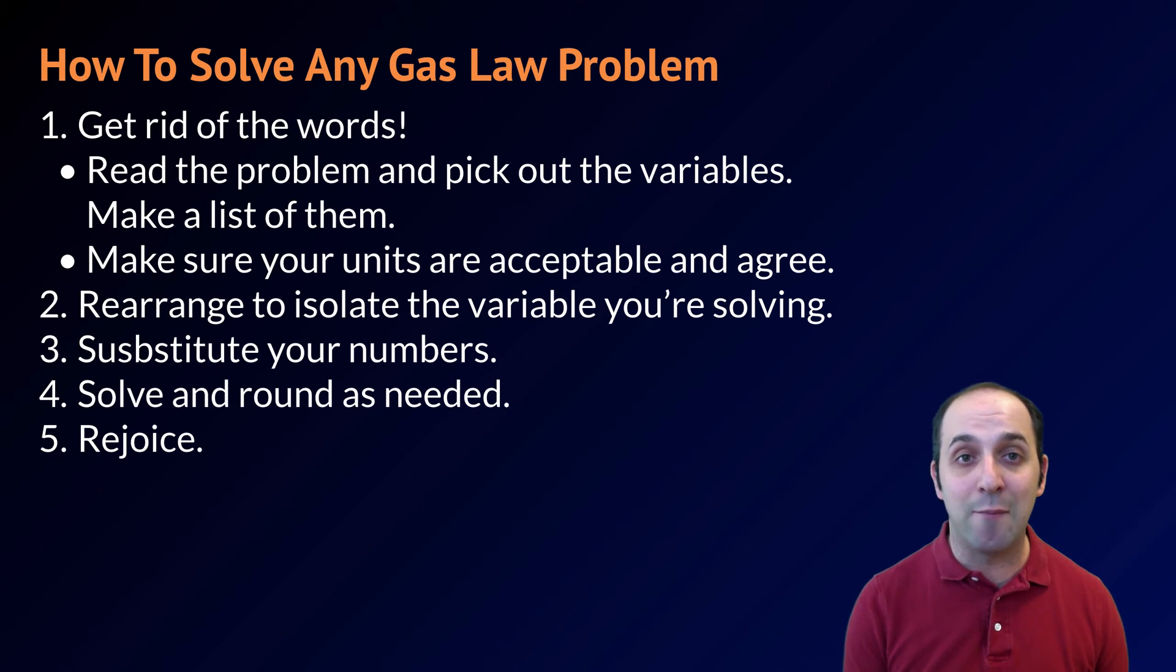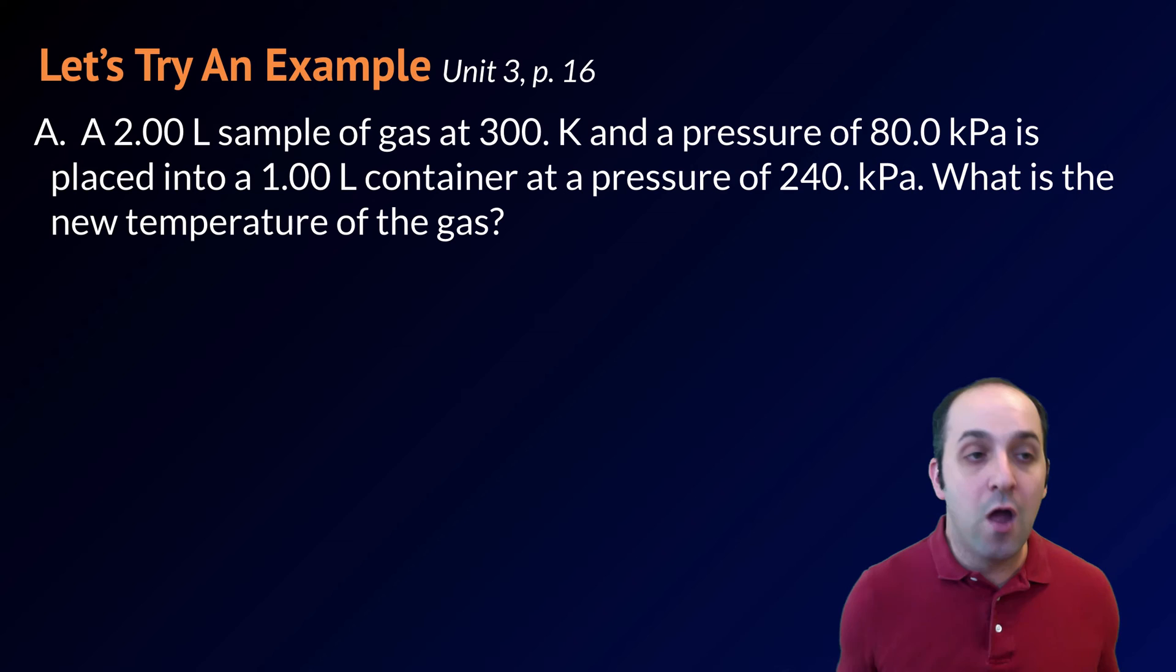Let's take a look at an example. This is from page 16 of our Unit 3 packet. A 2-liter sample of gas at 300 degrees Kelvin and a pressure of 80 kilopascals is placed into a 1-liter container at a pressure of 240 kilopascals. What is the new temperature of the gas? Pause the video, take a moment and see if you can solve it, and when you're ready, let's move on.